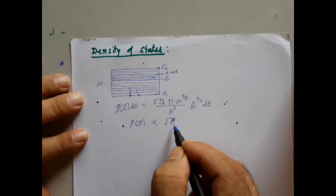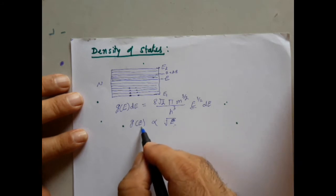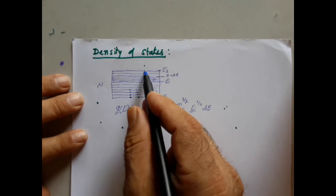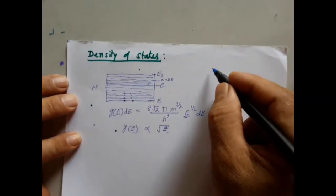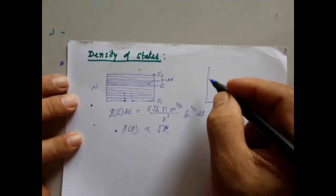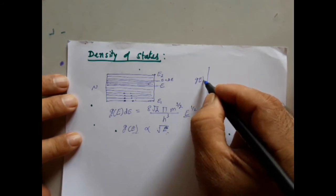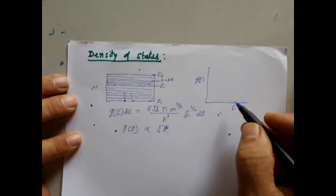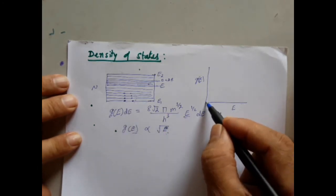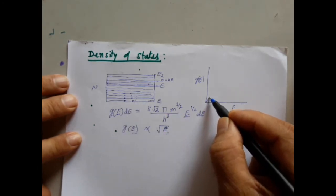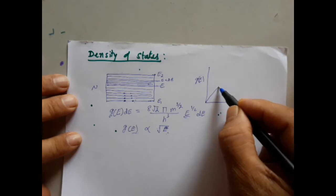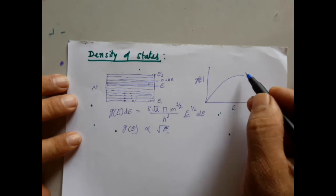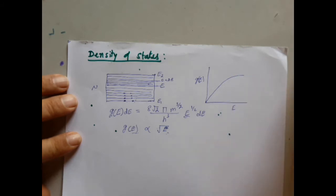When there is more energy, there are more energy levels. The energy levels are not equally distributed. If we plot the total number of energy levels per unit volume versus energy, at the lowest energies the number of levels is small, and as energy increases, the number of levels increases to a maximum.